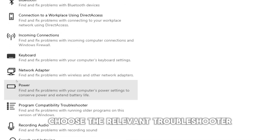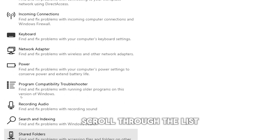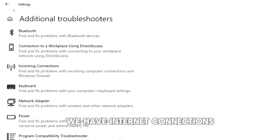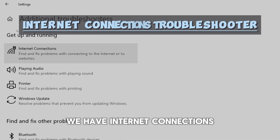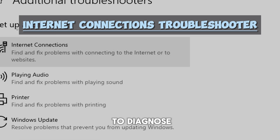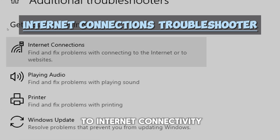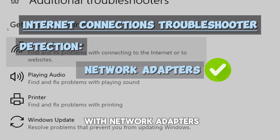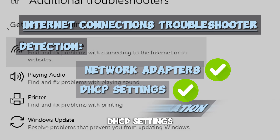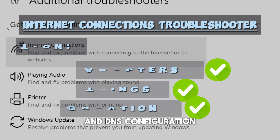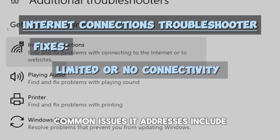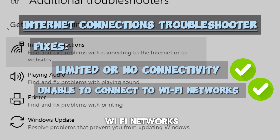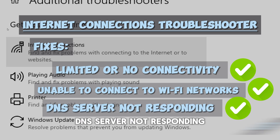Scroll through the list and select the troubleshooter that corresponds to the problem you're experiencing. The Internet Connections troubleshooter is designed to diagnose and fix issues related to internet connectivity. It can identify problems with network adapters, DHCP settings, and DNS configuration. Common issues it addresses include limited or no connectivity, unable to connect to Wi-Fi networks, and DNS server not responding.